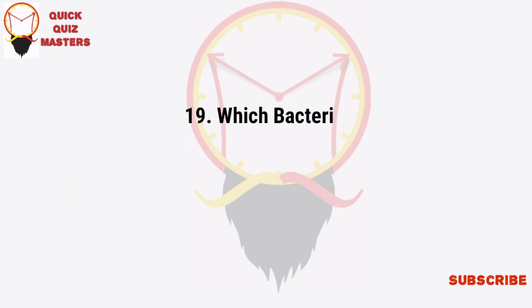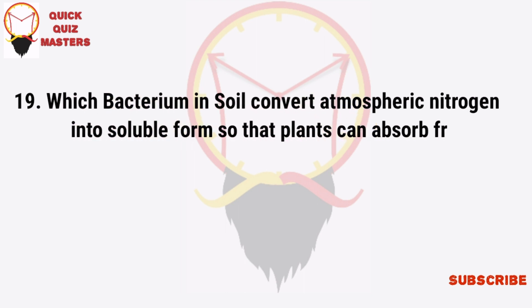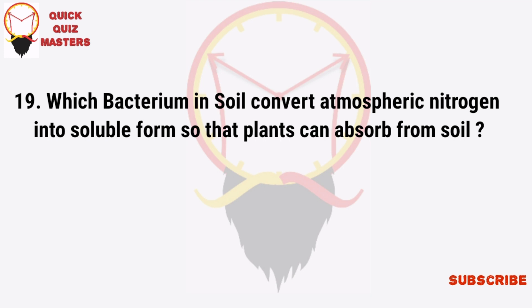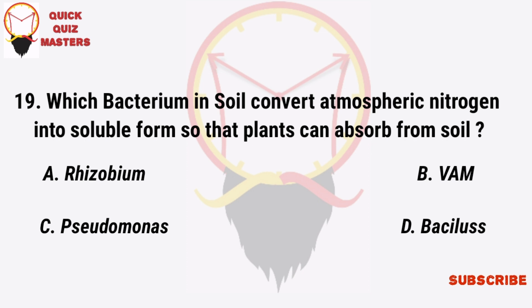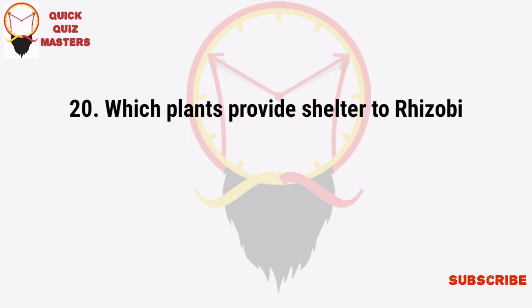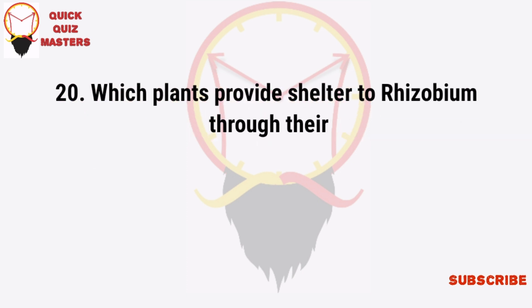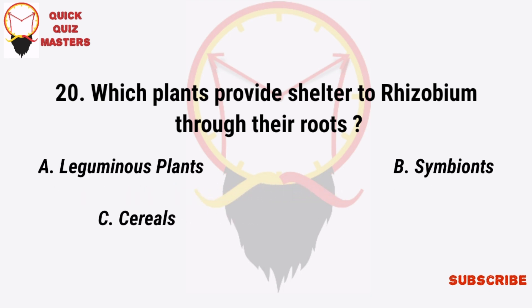Which bacteria in soil convert atmospheric nitrogen into soluble form so that plants can absorb it from soil? Which plants provide shelter to Rhizobium through their roots? Leguminous plants, some vines, cereals, all of these.